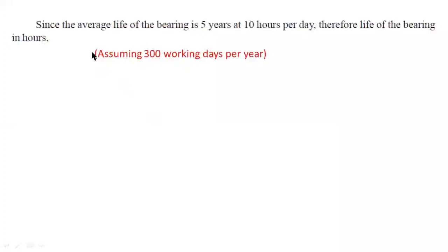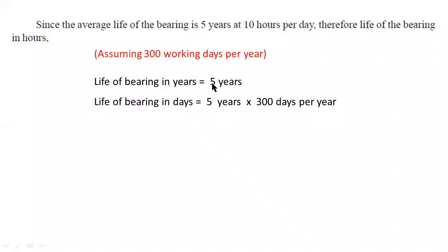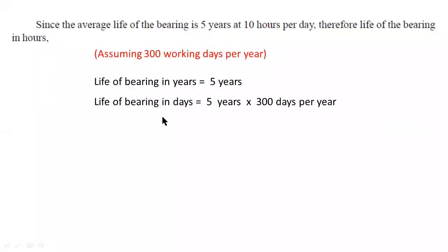First, convert the life from years to hours. The life is 5 years. Considering 300 working days per year: 5 × 300 = 1500 working days. This is the life of the bearing in working days.